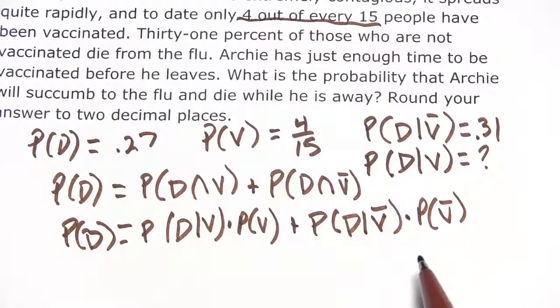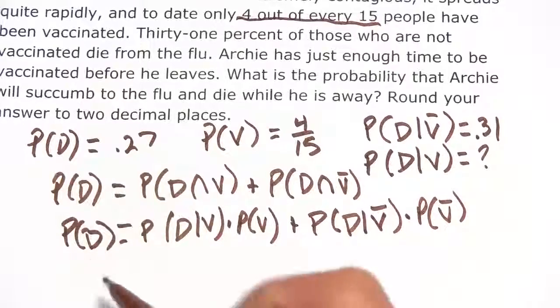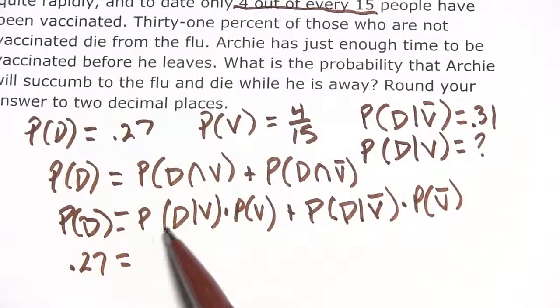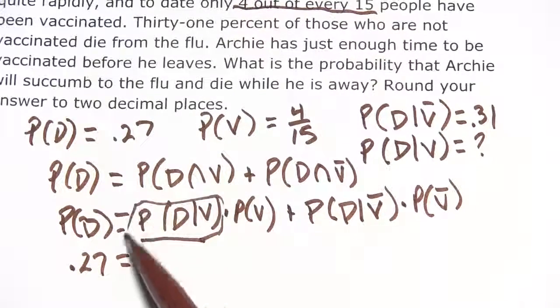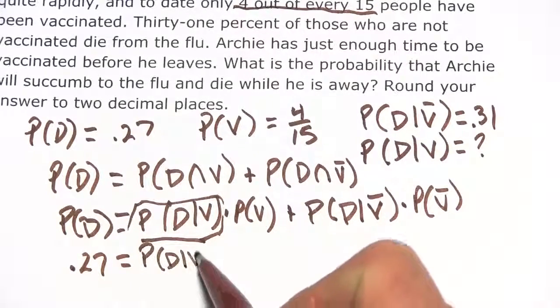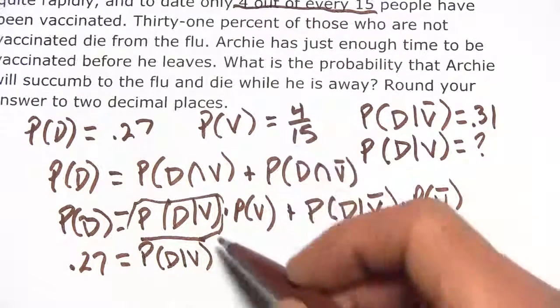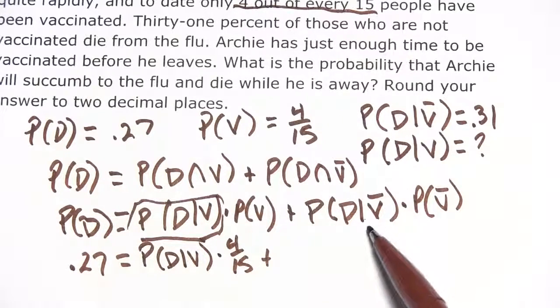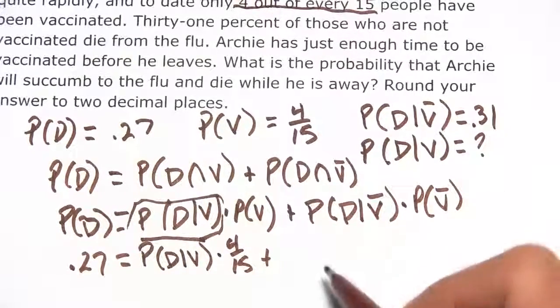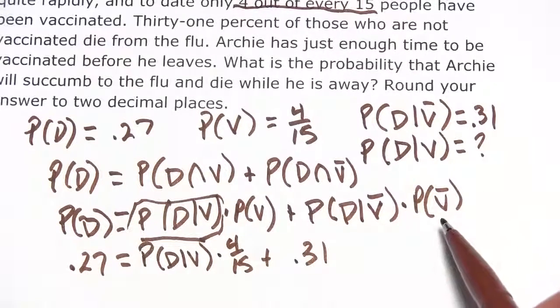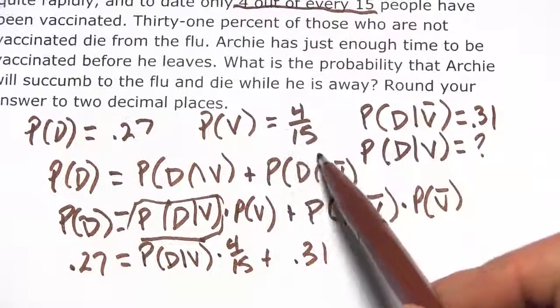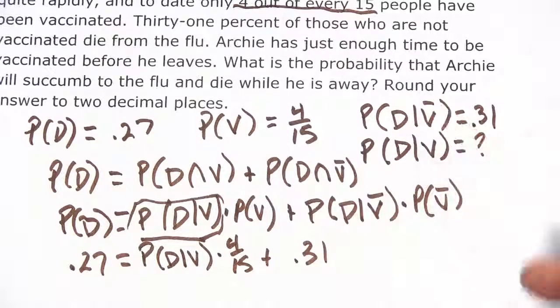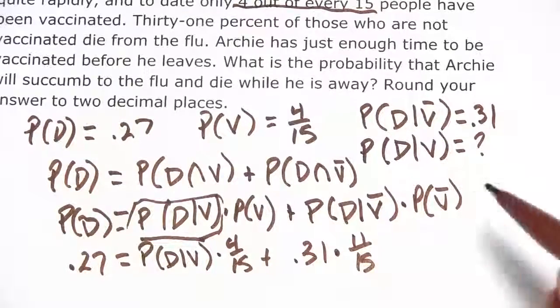Now we're really cooking. We have pretty much everything we need. The probability of dying is 0.27, so I'll fill that in. The probability of dying given that you've been vaccinated—that's what we're looking for, that's Archie. The probability of having been vaccinated is 4 out of 15. The probability of dying if you haven't been vaccinated is 0.31. The probability of not having been vaccinated—we weren't given that, but we can get it with the complement rule. If the probability of being vaccinated is 4/15, then 1 - 4/15 = 11/15, that's the probability of not being vaccinated.